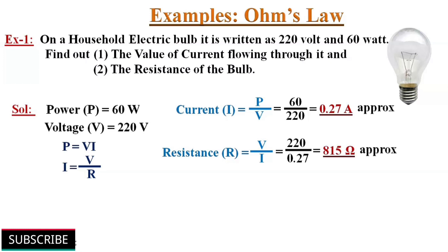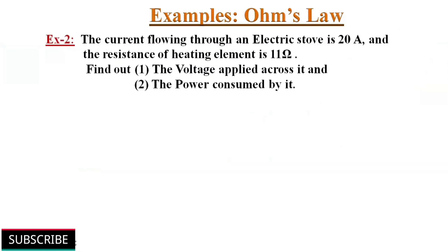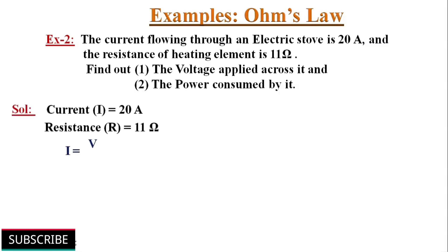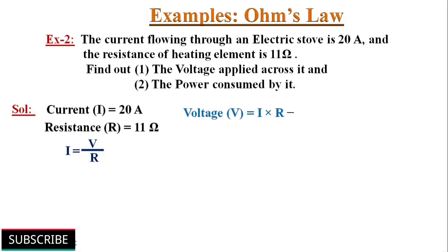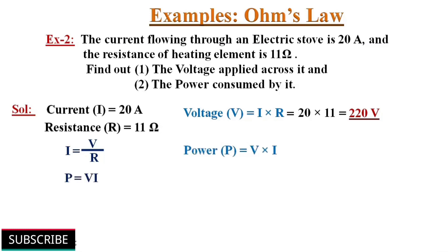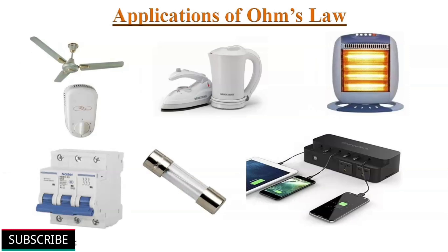Like this, we can find unknown values using Ohm's law formulas. Let's solve one more example. The current flowing through an electric stove is 20 amperes and the resistance of the heating element is 11 ohms. Find the voltage applied and the power consumed. Voltage V equals I times R — 20 multiplied by 11 gives 220 volts. Power P equals V times I — that gives 4400 watts of power consumed by the stove.